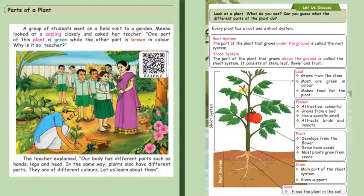The roots always grow under the ground and the shoot system - the stem, leaves and flower - goes above the ground. In the shoot system we have the leaf which grows from the stem and most of the leaves are green in color and they make food for the plant. Then we have flower which is attractive and colorful.